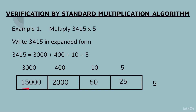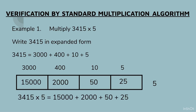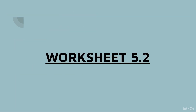Now we will add all these numbers: 3415 × 5 = 15,000 + 2000 + 50 + 25, which gives us 17,075 — the same answer we got before. This is known as verification by standard multiplication algorithm. Dear students, let us do a worksheet to enhance our understanding.